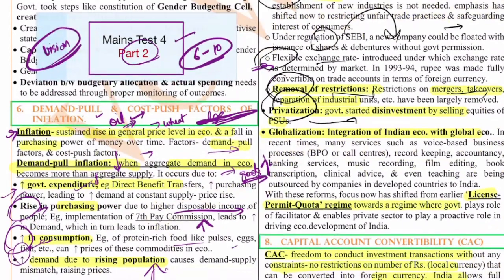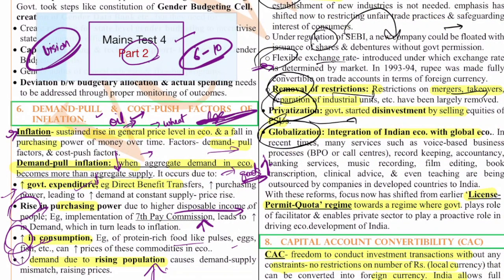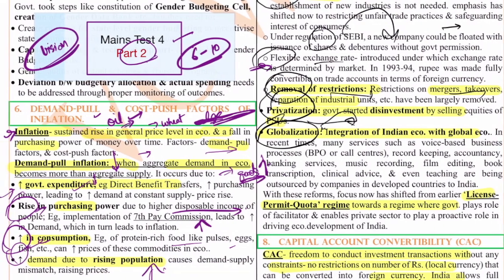Globalization means India integrating with other global companies and countries. Many businesses started coming to India — BPOs, call centers, and even the IT industry — because the government did away with the license raj and quota system, where earlier the government gave a fixed number of licenses and even controlled how much to produce. With all these things removed, India has become a major player in global markets today. The Indian IT industry has evolved and is now flourishing. Now the time is to develop the manufacturing industry so we can reap the benefits of our demographic dividend.